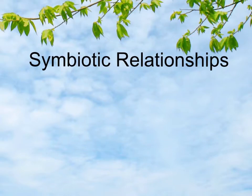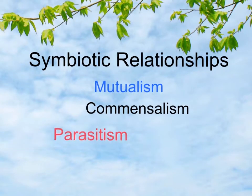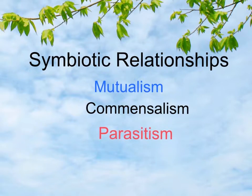Symbiotic relationships are close relationships that exist between two or more organisms. There are three types of symbiotic relationships that we need to know about: mutualism, commensalism, and parasitism. These are big words, and remembering the difference between their definitions can be a little confusing sometimes. So let's take a look at each one and see if we can come up with some ways to help us remember the difference between these three types.